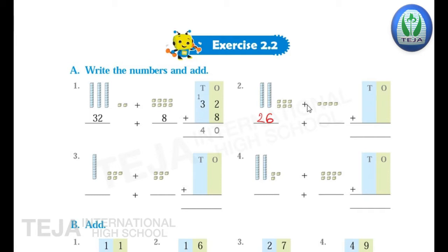Now the next number — how many cubes are there? Count the cubes: 1, 2, 3, 4 cubes. So the second number is 4. Write 4 in the blank. Now we will arrange the numbers in the columns. In the 1's place write 6, in the 10's place write 2, so 26. And the second number is 4, so write 4 in the 1's place. There is no 10's place, only 1's.